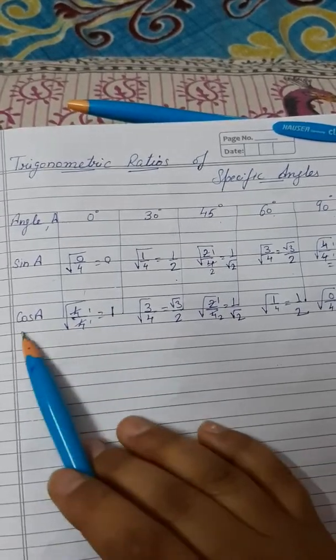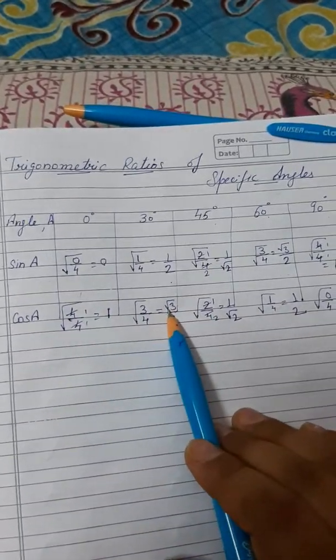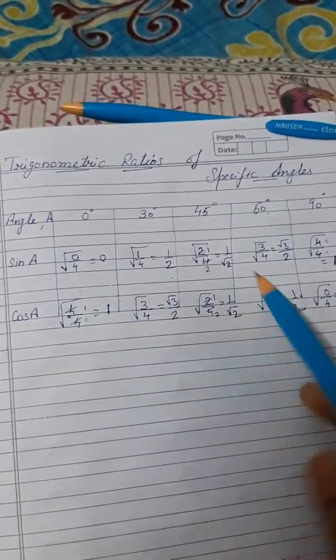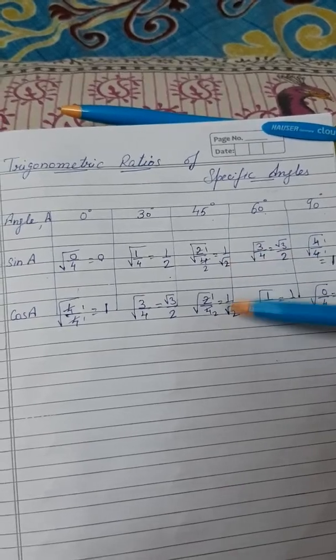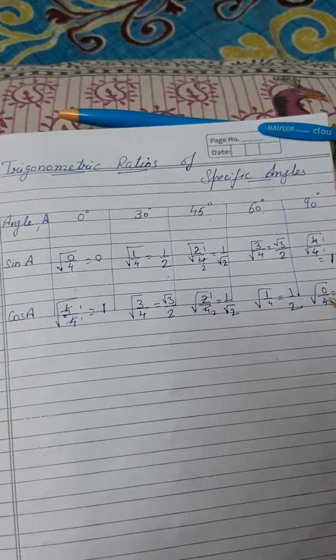Similarly, cosine. Cosine angles are in reverse order. Cosine 0 is 1. Cosine 30 degree under root 3 by 2. Cosine 45 is 1 by under root 2. Both have the same values. 60 degree cosine is 1 by 2. And cosine 90 is 0.